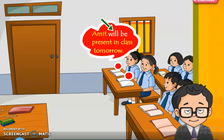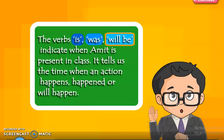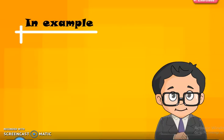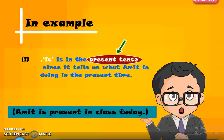The verbs 'is', 'was', and 'will be' indicate when Amit is present in class. They tell us the time when an action happens, happened, or will happen. In example one, 'is' is in the present tense, since it tells us what Amit is doing in the present time. 'Is' shows present tense. Whenever present tense is used, it tells about something happening now or at the present time.